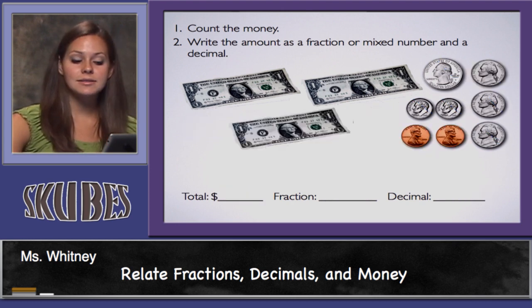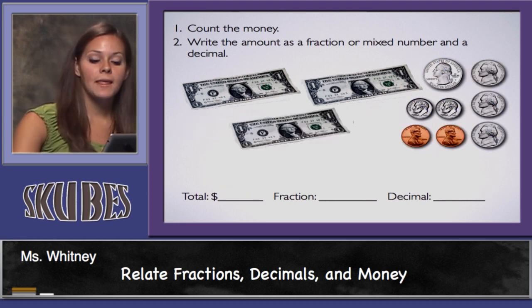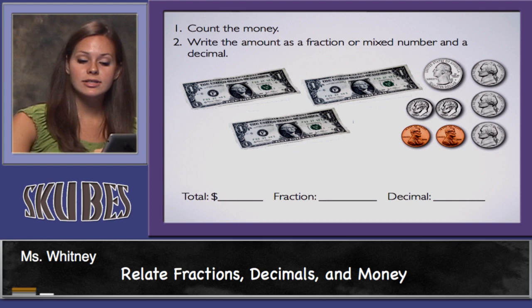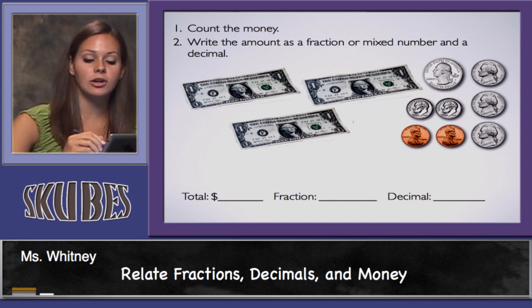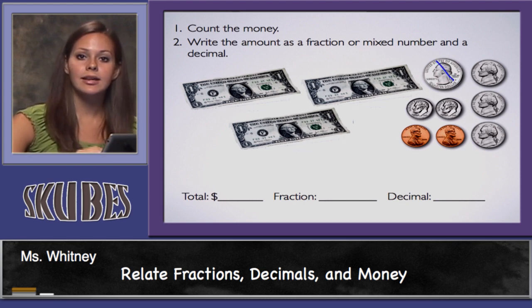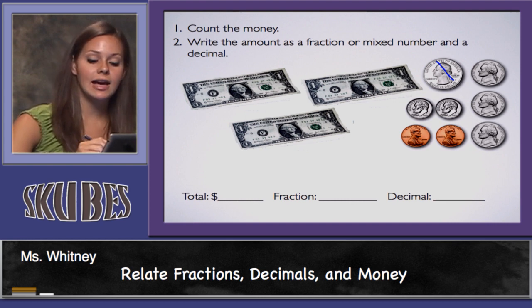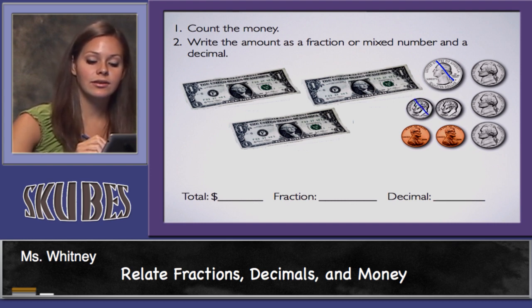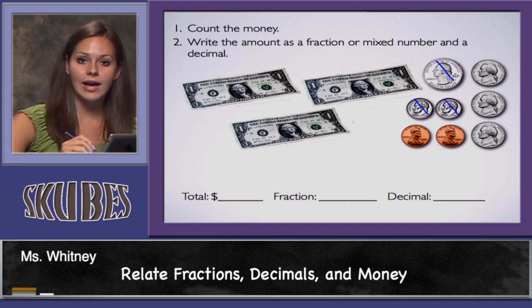Let's count this money. I see I have three dollars, now I'll count my change. Starting with my quarter: 25 cents. Next to my dime: 35 cents, 45 cents.